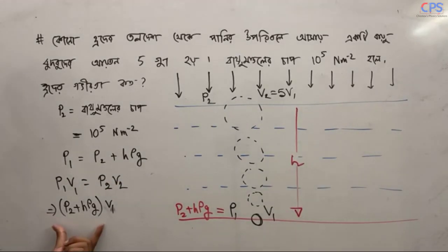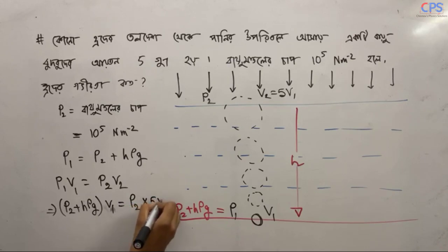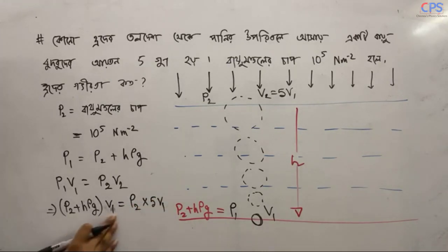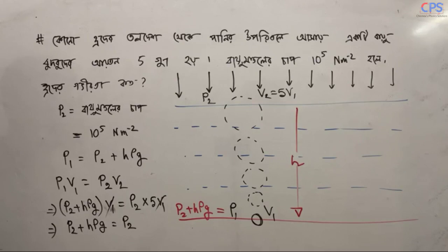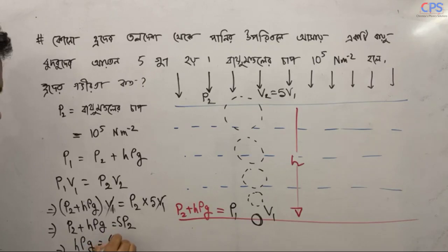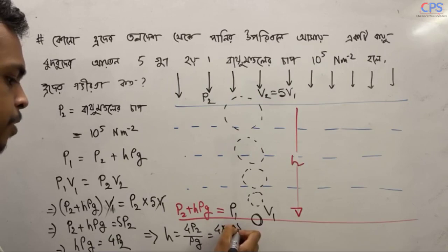Here, P1 is equal to P2 plus S·ρg. V1 equals P2·V2. So P2·V2 equals V2 — V2 equals 5·P2. So S·ρg equals 4·P2. Therefore what can be found here: H equals ρg divided by 4·P2. The value is 10 to the power 5 divided by ρ.